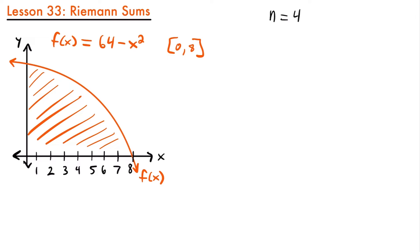I'm going to make my rectangles like this — one here, one here, another one here, and one right here. That last one is going to be really small. Notice that I drew these rectangles such that the upper right-hand corner of each rectangle is touching our function. We call this finding the area using right endpoints, because we're using the right corner of our rectangles and meeting them up with our function.